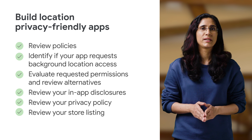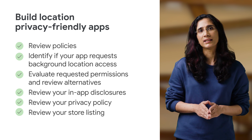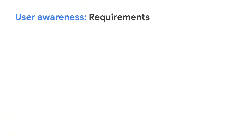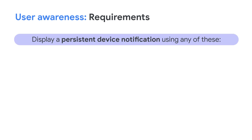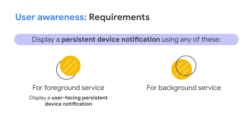Please make sure to spend some time to review the details from the policy center to fully understand the policy and avoid any potential enforcement on your app. We also have requirements on app visibility, particularly on user awareness. Apps must display a persistent device notification to the user if the app runs in the background or foreground. For apps that collect information in the foreground or use foreground service, the app must display a user-facing persistent device notification when the app is running and capable of automatically collecting this information. For apps that collect information when running as a background service, the app must display a daily user-dismissible notification informing the user of the collection, polling, or handling of this information.